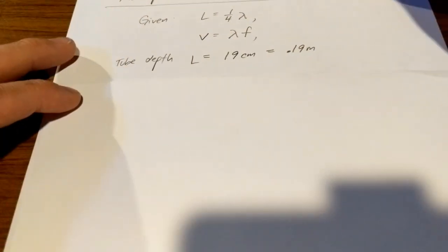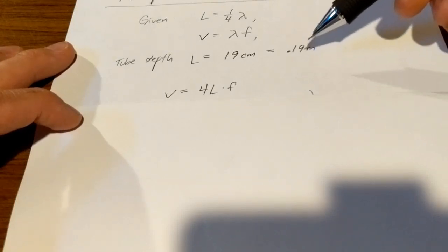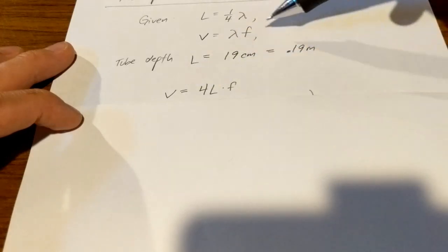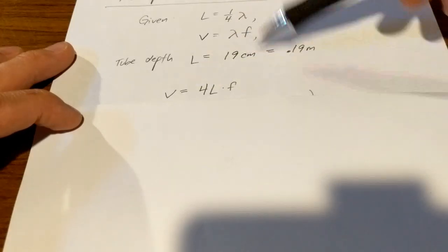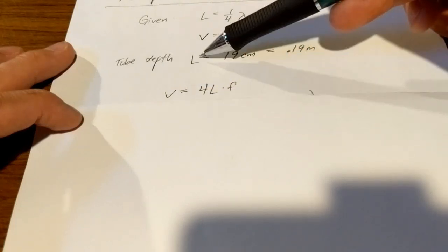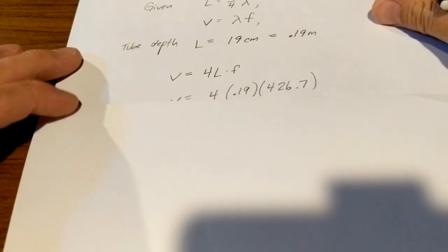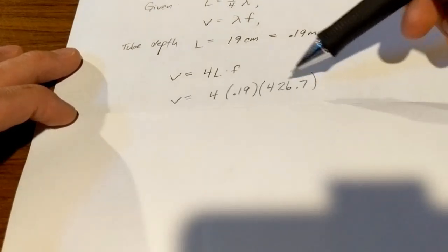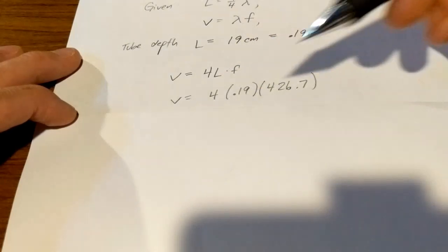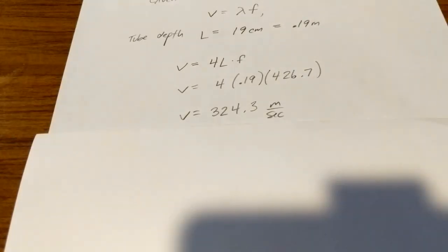Here is that calculation. According to us, if the tube depth is 19 centimeters, then the speed is going to be the wavelength times the frequency, and the wavelength is four times the length. So, the speed can be calculated as four times that length times the frequency, which you were given in the previous video, is what the tuning fork is putting out, 426.7 hertz. With those two numbers put in, we can find the speed in meters per second, and it comes out 324.3.